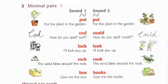2C: Pot the plant in the garden. Put the plant in the garden. How do you spell cod? How do you spell could? I'll lock you up. I'll look you up. The wind blew around the rock. The wind blew around the rook. Give me the box.